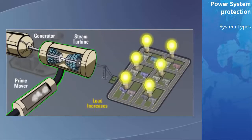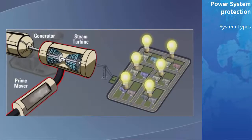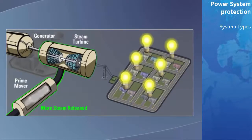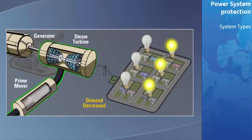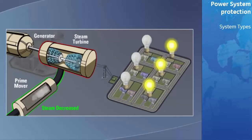As the load increases, the generators would tend to slow down, resulting in a reduction of output voltage and frequency. The generator's control system will sense this and input more mechanical energy to match the increased load. If the demand decreases, the generator will speed up, and the control system senses this and then takes appropriate action to reduce the mechanical energy input into the system.